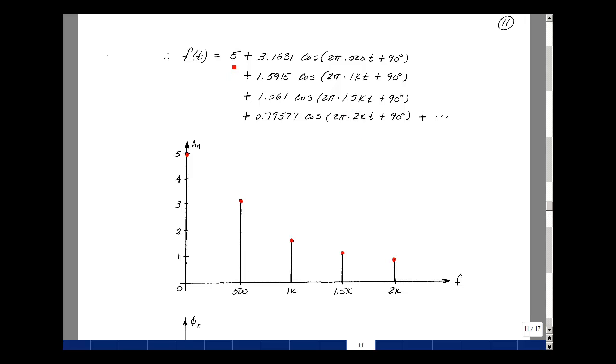Our amplitude spectrum is plotting the values of these amplitudes versus frequency. At 0 hertz, we have an amplitude of 5. At 500, we have 3.183. At 1 kilohertz, 1.5915. At 1.5 kilohertz, 1.061. At 2 kilohertz, 0.79577, and so on.